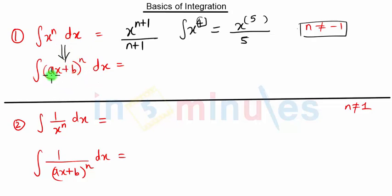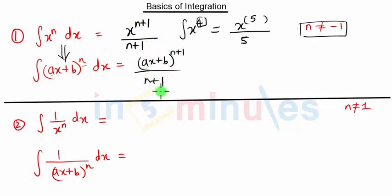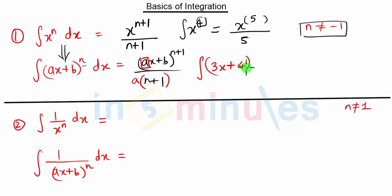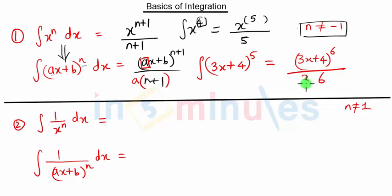The modified version is for (ax + b) raised to n, where a and b are constants. The formula remains the same: (ax + b) raised to n plus 1, over n plus 1, but now we also divide by the coefficient of x, which is a. So it becomes (ax + b) raised to n plus 1, upon a(n + 1). For example, (3x + 4) raised to 5 becomes (3x + 4) raised to 6, over 3 times 6.